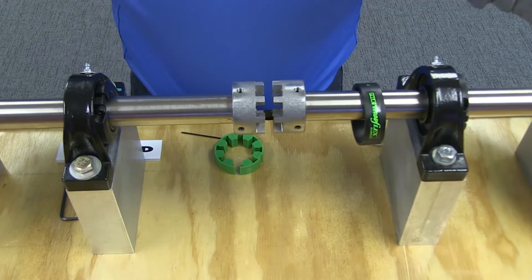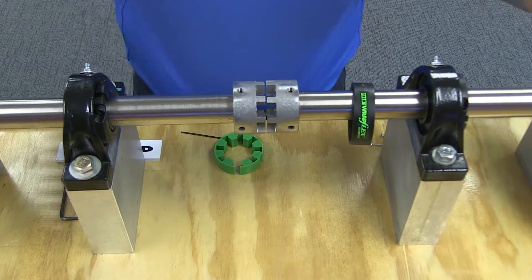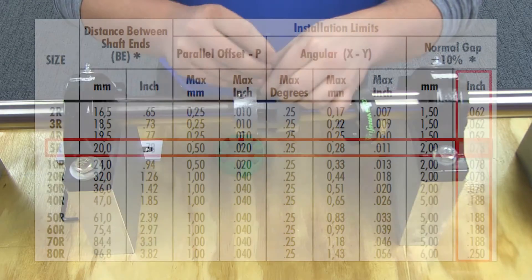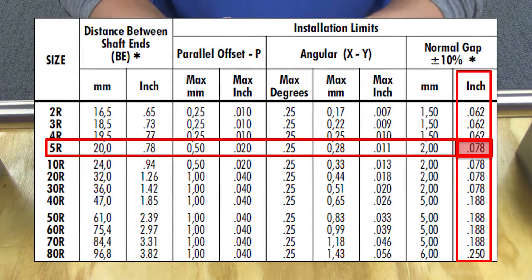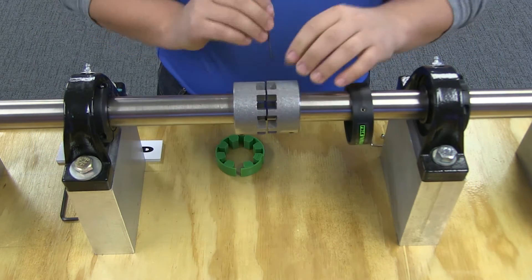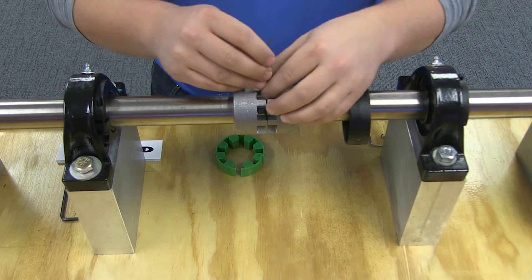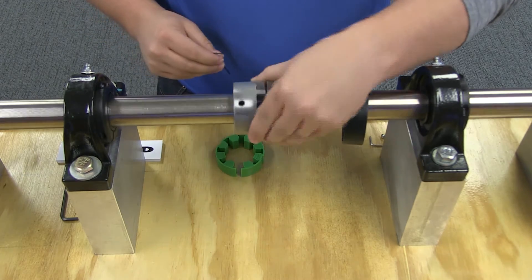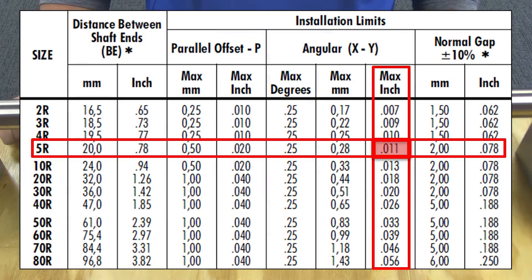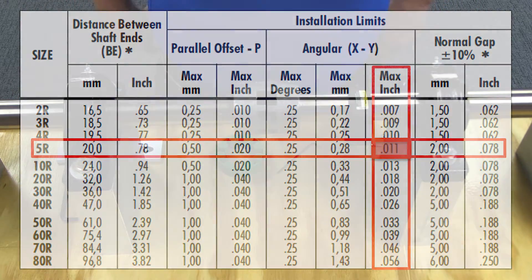Next, you set the gap and ensure proper angular alignment. For proper alignment, insert a spacer bar equal in thickness to the gap specified in this table between the hub teeth as shown. Do this to the same depth at 90-degree intervals and measure clearance between the bar and the hub tooth face with feelers. The difference between minimum and maximum gap measurements must not exceed the angular installation limits specified in this table.